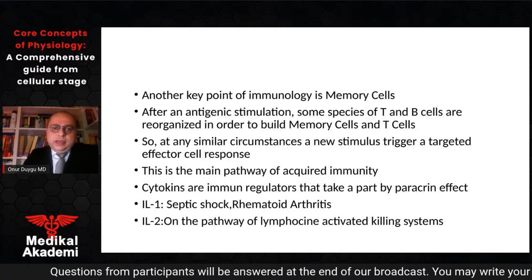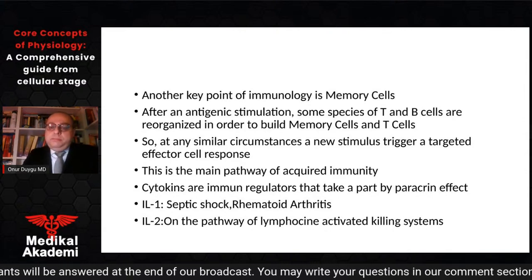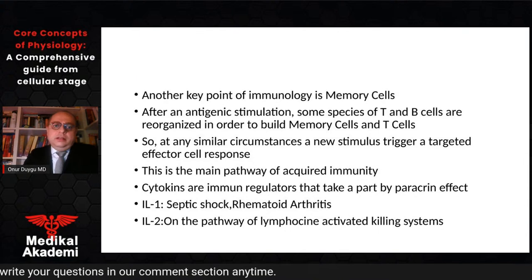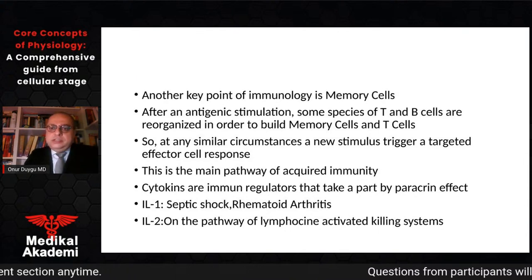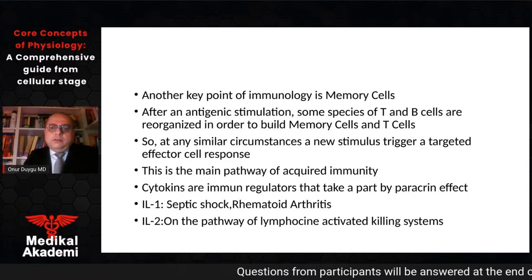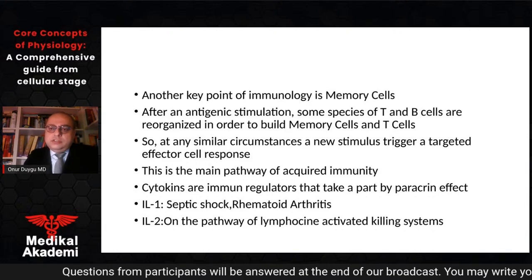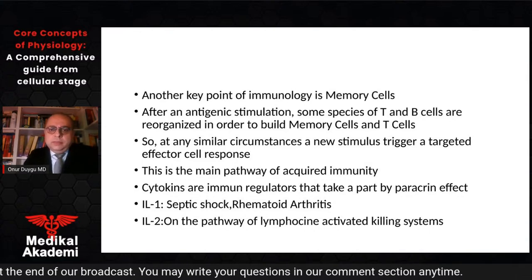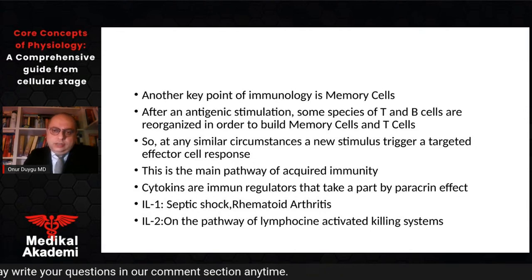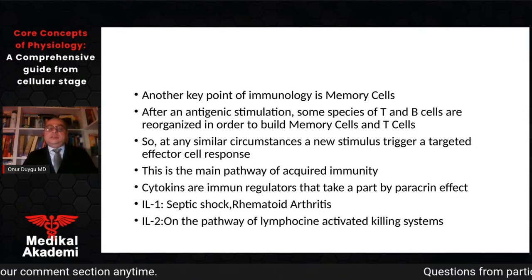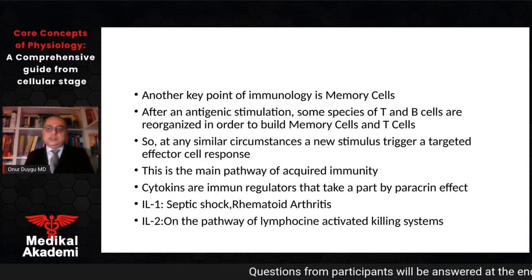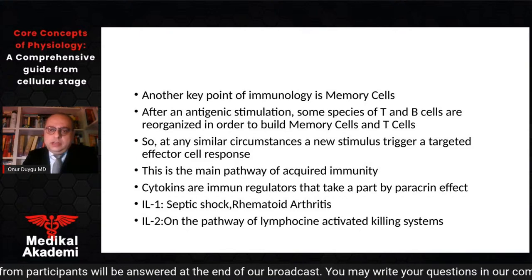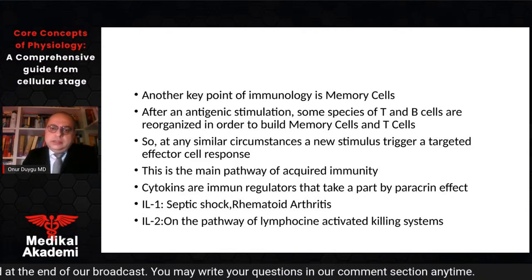Another key point of immunology is memory cells — very important as we saw with COVID-19 vaccination. After an antigenic stimulation, subsets of T cells and B cells are reorganized to build memory cells. B cells organize memory cells, and T cells are reorganized by antigenic stimulation. Any microscopic invasion or tumor stimulus triggers a targeted cell response. This is the main pathway for acquired immunity.